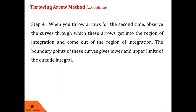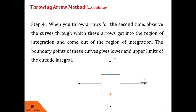When we throw arrows for the second time, we observe the curves through which these arrows get into and come out of the region. The boundary points of these curves give us the lower and upper limits of the outside integral. For example, when we throw arrows parallel to the y axis from bottom to top, the boundary point of the first curve crossed gives the lower limit of the outside integral, and the boundary point of the second curve gives the upper limit.